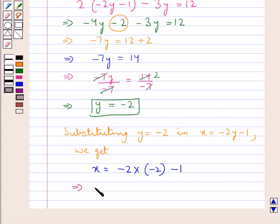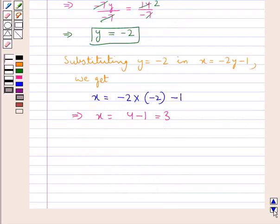We have x is equal to 4 minus 1, which is 3. Thus, we get the value of x as 3.